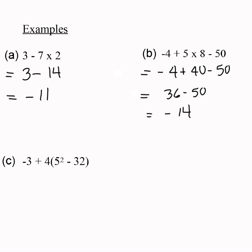This is an example of something where there is something inside the bracket to do. So let's have a look at this one. Negative 3 plus 4 times, we're going to do 5 squared first. Then, we're going to do 25 minus 32. Then, we get negative 7.